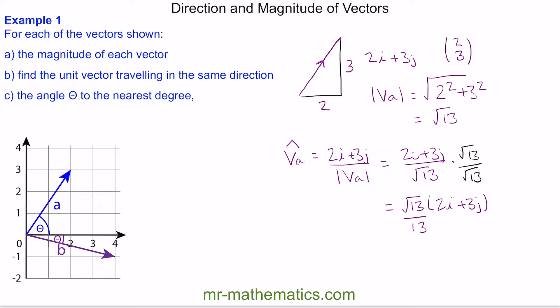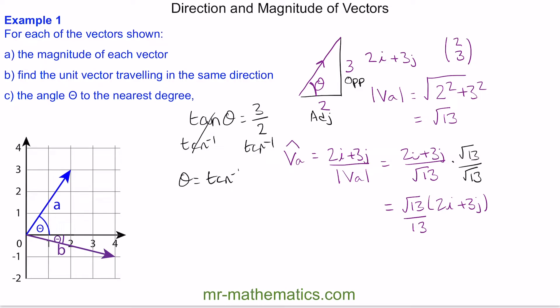Finally, part C: the angle theta to the nearest degree. Again, we're going to use a right-angle triangle. This is the angle theta. Because we have the opposite, which is 3, and the adjacent, which is 2, we can use tan. The angle theta equals the arc tan of the opposite divided by the adjacent, which gives us approximately 57 degrees.